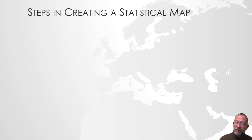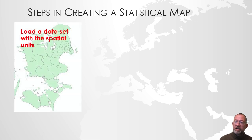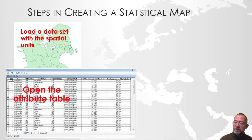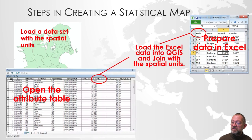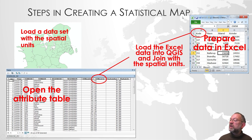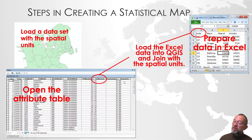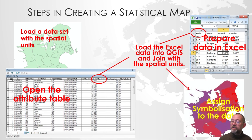If we remember from the lecture on attribute data, the basic idea is that we have some spatial units, and we have some attribute tables belonging to those spatial units. We have a spreadsheet in Excel or another spreadsheet software, and we then establish a join between the two based on a common attribute value. Once we have done that, we can then map new attributes from our data.